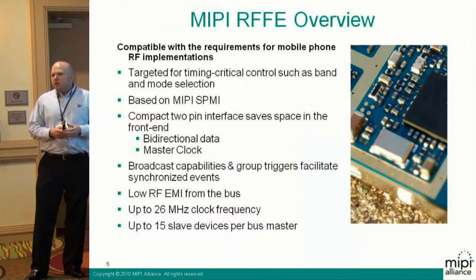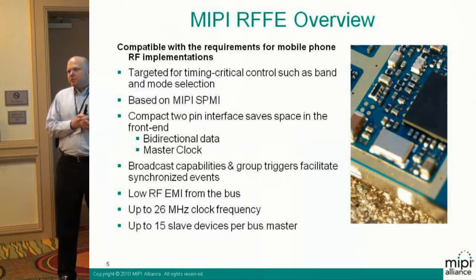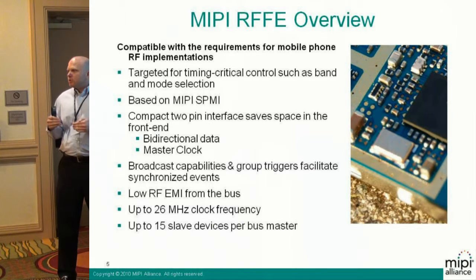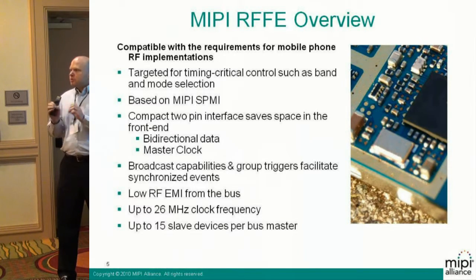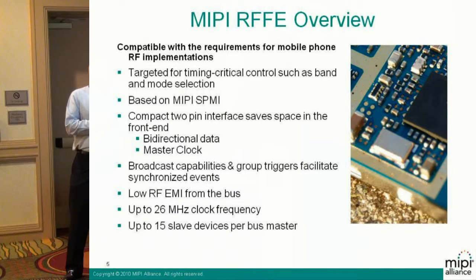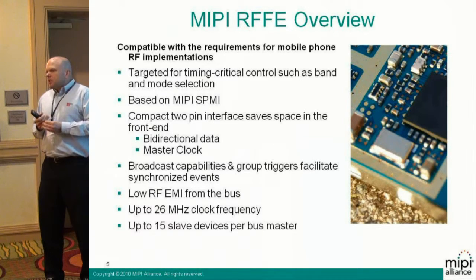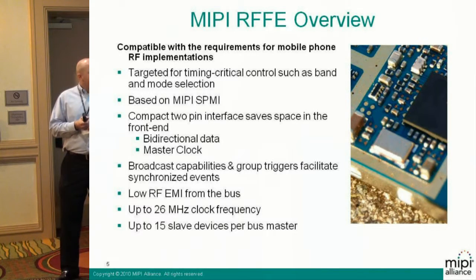Data can go both ways, but it has to be initiated by the master. There are broadcast capabilities and group triggers to facilitate events that have to happen at the exact same time. You can pre-load devices, and when you send out the group trigger, you trigger the same set of commands on all devices simultaneously. Clock frequency is tied together with EMI — you can run up to 26 MHz clock frequency. And you can use up to 15 slave devices per bus master.